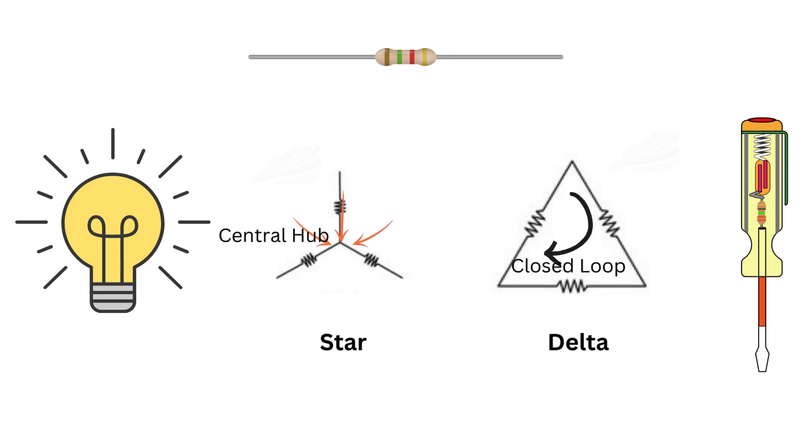To sum it up, the star connection is like having a central hub where everything connects and the delta connection is like a continuous loop where everything is connected end to end. Each has its own advantages and is chosen based on what the electrical system needs.